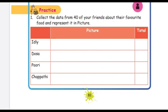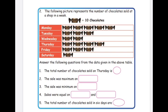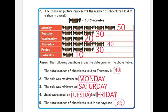Practice: collect data from 40 of your friends about their favorite food and represent it in a picture — that is your homework. Second question: the following picture represents the number of chocolates sold at a shop in a week. One toffee picture indicates 10 chocolates. Monday has five toffees — that is 50 chocolates. Tuesday three toffees — 30. Wednesday two toffees — 20. Thursday four — 40. Friday three — 30. Saturday one — 10.